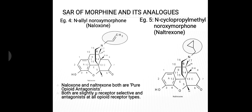The fifth example is N-cyclopropylmethyl nor-oxymorphone. As the name suggests, a cyclopropylmethyl moiety is present at the nitrogen atom. This drug is also known as naltrexone. Both naloxone and naltrexone are pure opioid antagonists, both are slightly mu-receptor selective, and both are antagonists at all opioid receptor types.